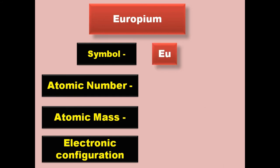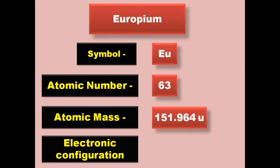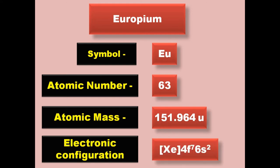Europium has symbol Eu, atomic number 63, atomic mass 151.964, electronic configuration [Xe] 4f7 6s2. Europium is a lanthanide and exists in solid form at room temperature.